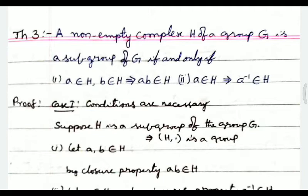Next theorem. A non-empty subset H of a group G is a subgroup of G if and only if: number one, a, b belongs to H implies ab belongs to H; and number two, a belongs to H implies a inverse belongs to H.